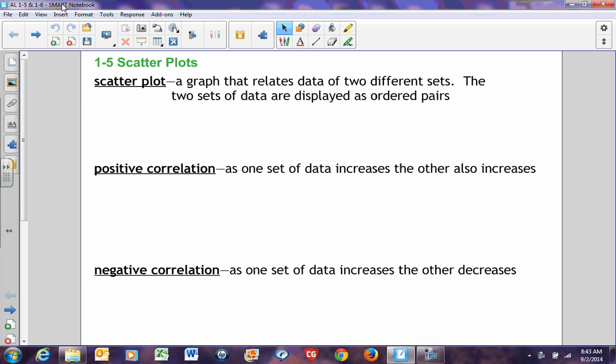This is Lesson 1-5 on Scatter Plots. A scatter plot is a graph that relates data of two different sets. The two sets of data are displayed as ordered pairs.